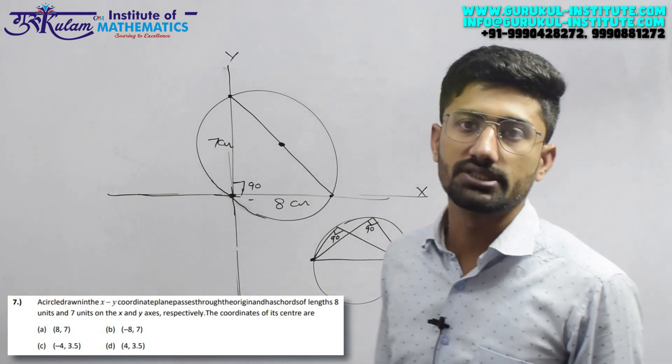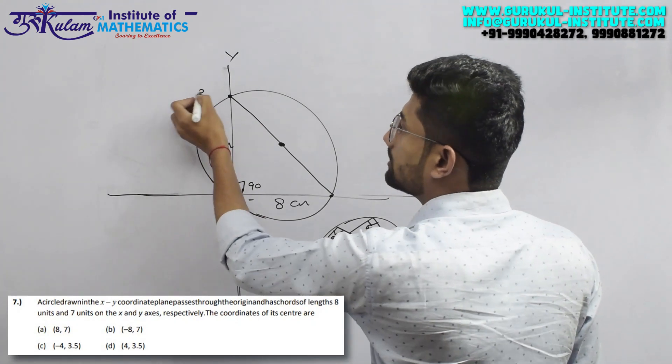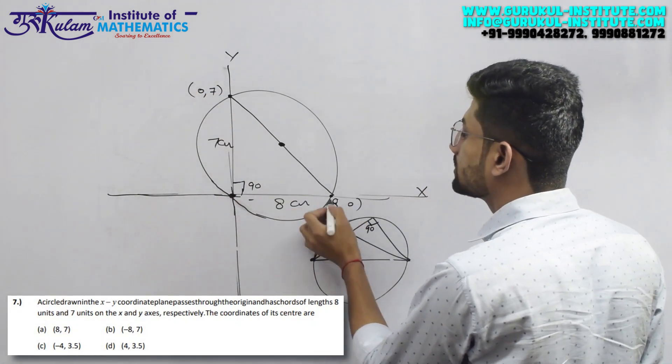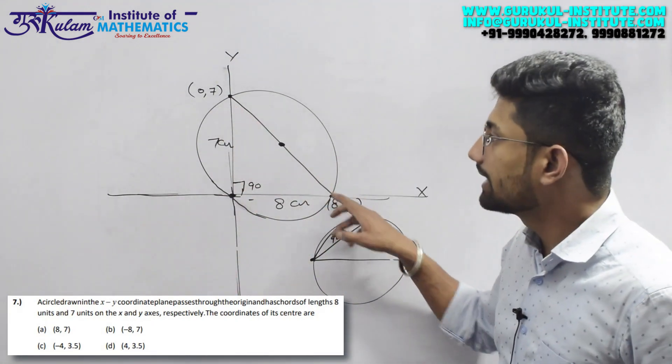So this will be the diagonal. Now if it's the diagonal, then its middle point will be the center. Now how will you calculate this middle point? This point has coordinates (0,7) and this point has coordinates (8,0).